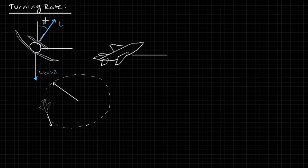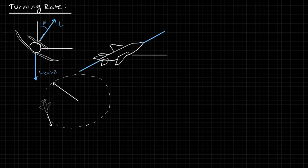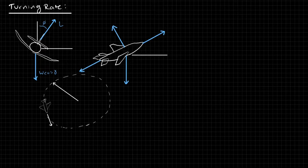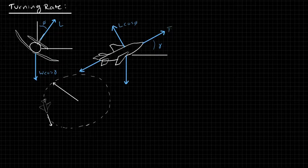This is phi, and then let's go to the other views here. So we have our thrust, drag, weight, lift, and this is our climb angle gamma. This is L cos phi because we are at a bank angle. Thrust, drag are just as they are, and this is the weight.